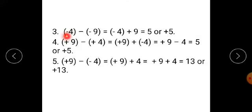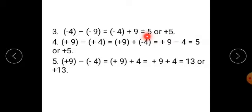Next example: minus 4 minus minus 9. The opposite of minus 9 is plus 9. Therefore, minus 4 plus 9. Signs are different, so 9 minus 4 gives you 5, and the sign of the bigger number gives plus 5.